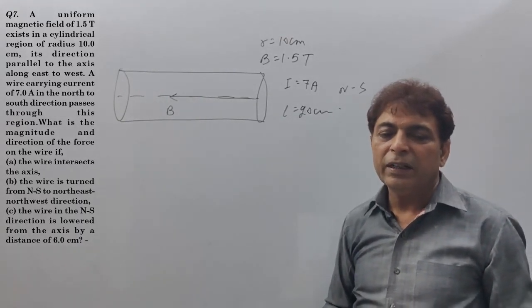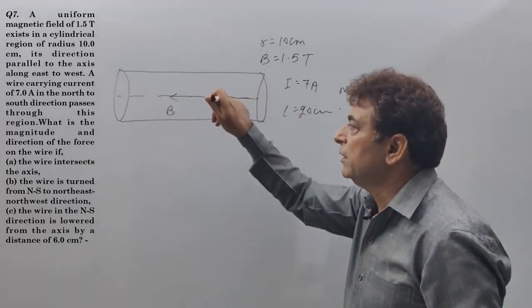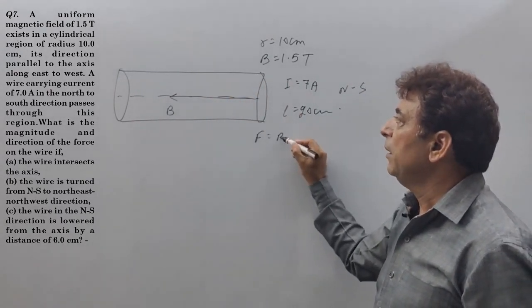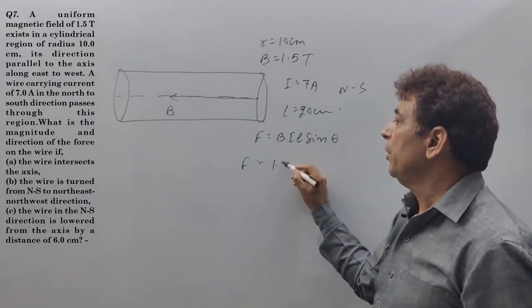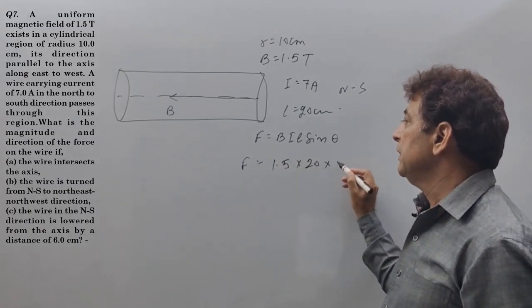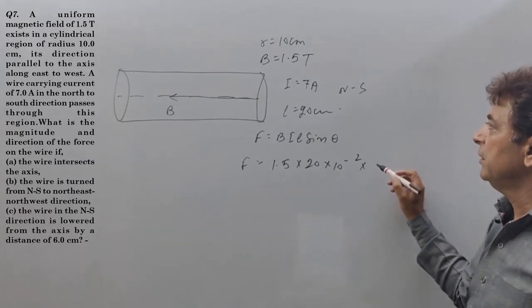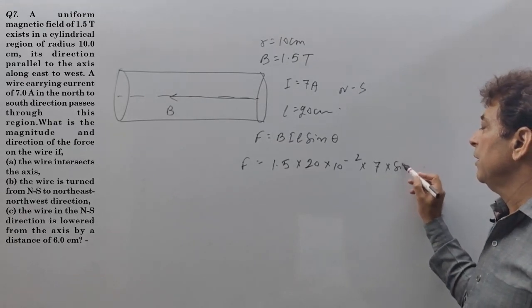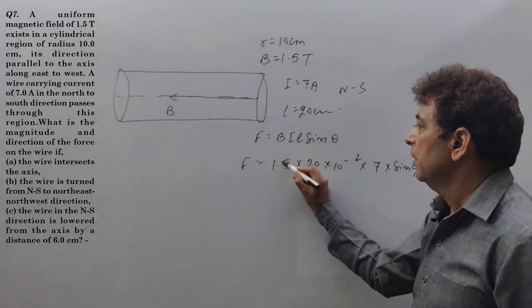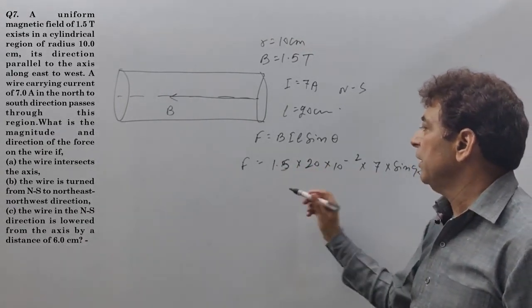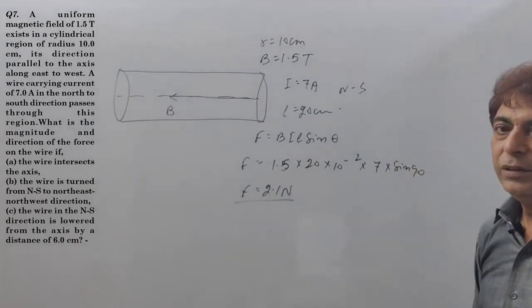Now the question is, what is the magnitude and direction of the force of the wire if the wire intersects the axis? Wire crosses this axis. The force is given by BIL sin theta. B is equal to 1.5. Length is 20 cm. Current is 7 ampere, sin 90. 0.3 into 7, that is equal to 2.1 newton.